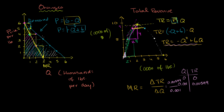Let's say we're the owners of this firm and we have a marginal cost curve that looks something like this. It's important to realize we are the market — we are the only producers here. So this isn't just our marginal cost curve; this is the marginal cost curve for the market. Another way to think about it: this is the supply curve for the market. It tells you at any given price how much the market is willing to supply.